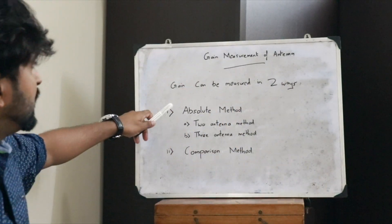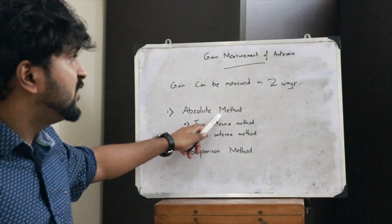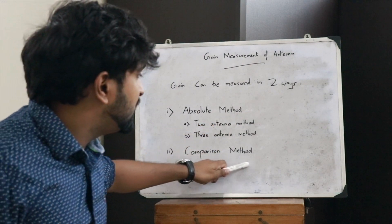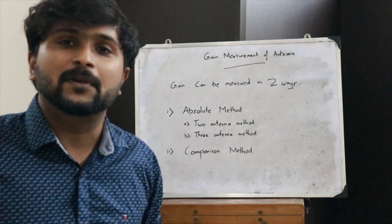Hello guys, welcome back to another video. Today we will be discussing how we can measure the gain of a particular antenna. In order to measure the gain of an antenna, there are two methods: the first method is the absolute method and the second method is the comparison method.